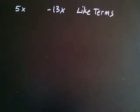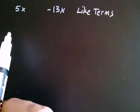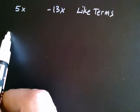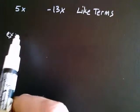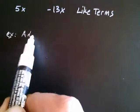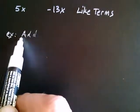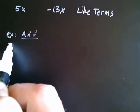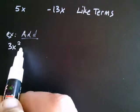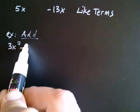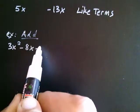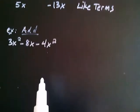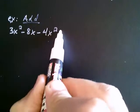So why are like terms special? Well, if you have like terms, you can add them together in the following way. Let's say that you wanted to add 3x squared, minus 8x, minus 4x squared, plus 11x.